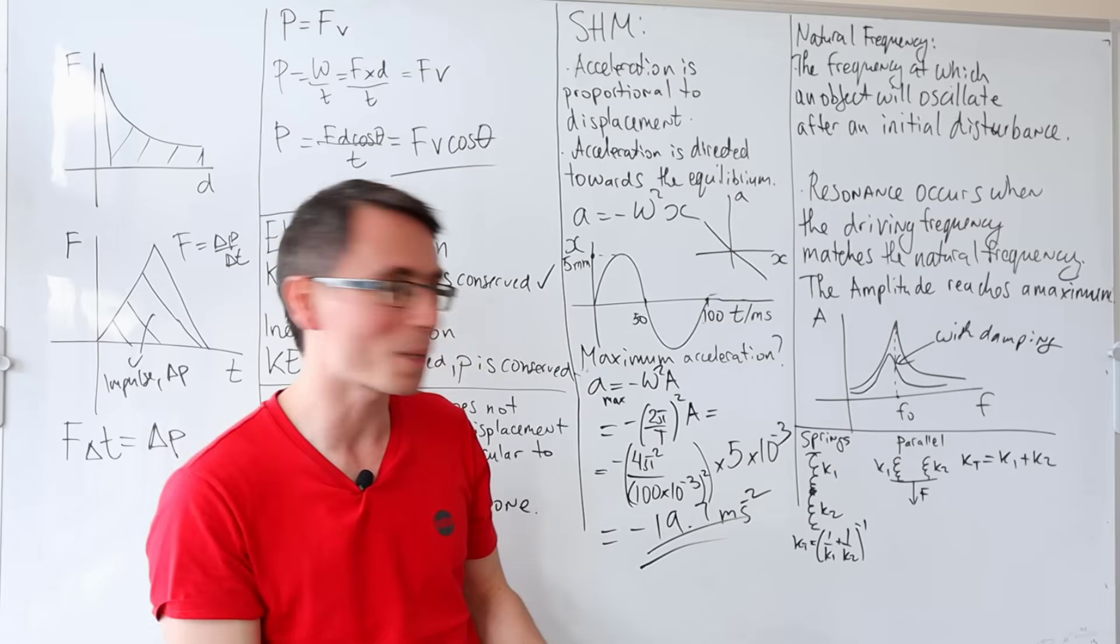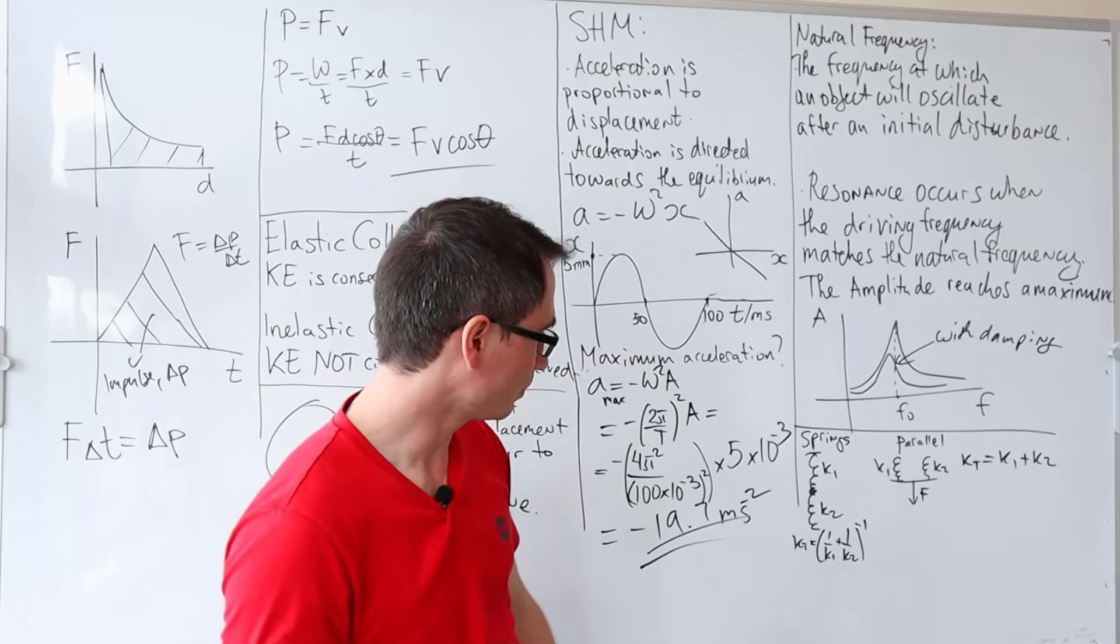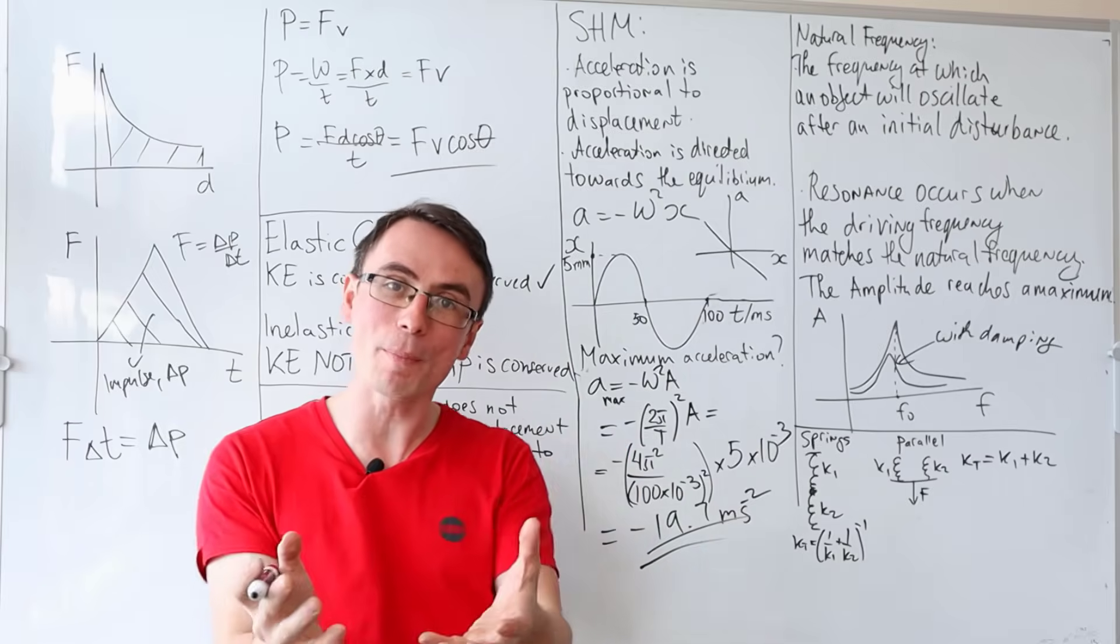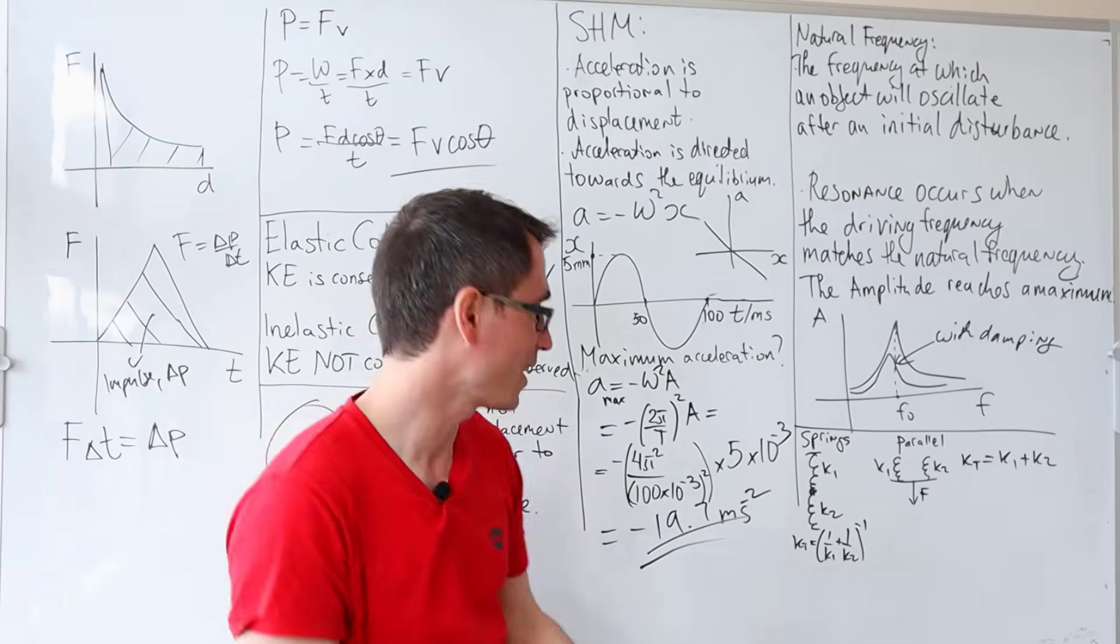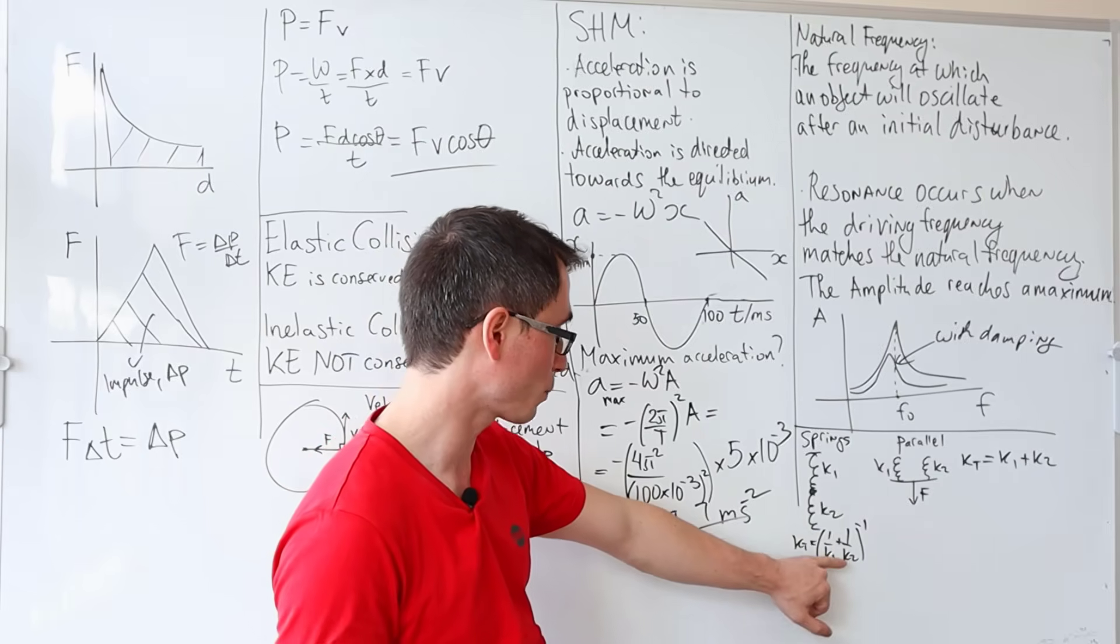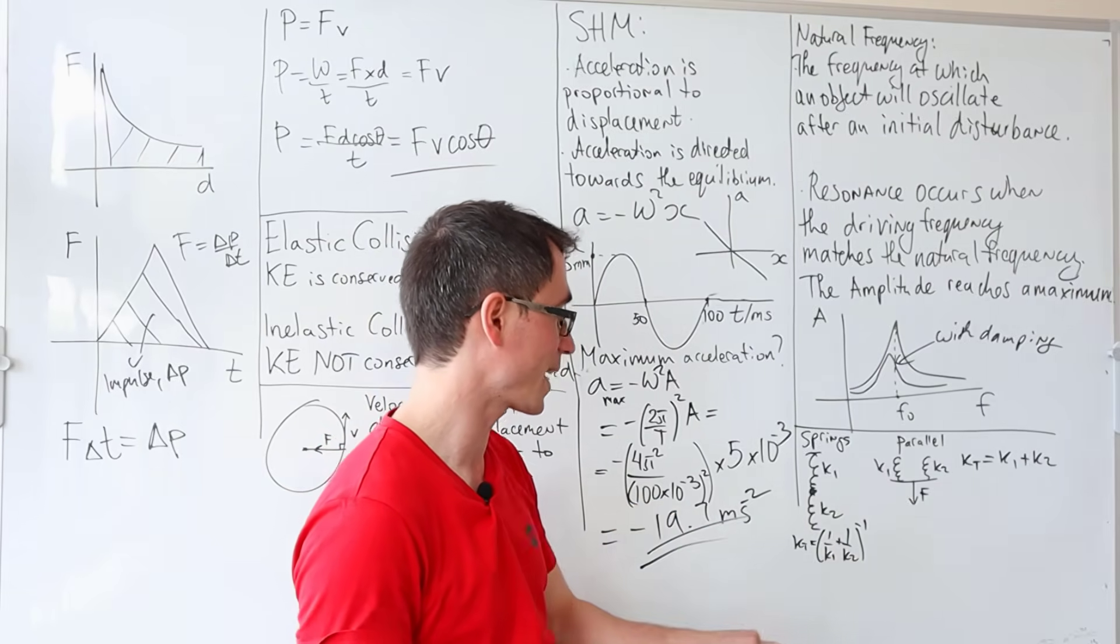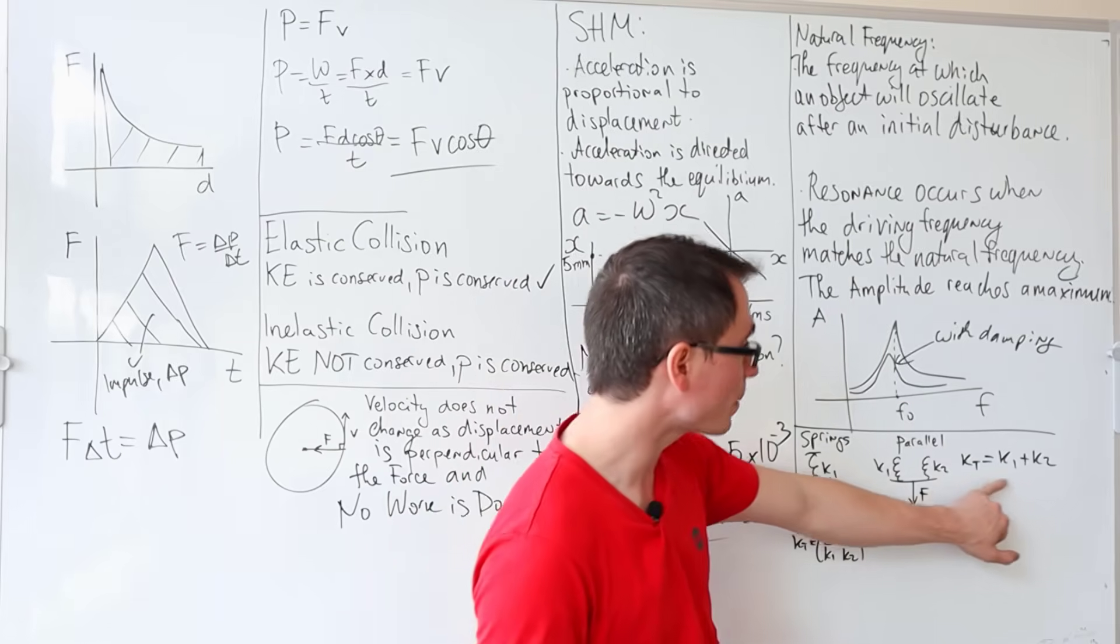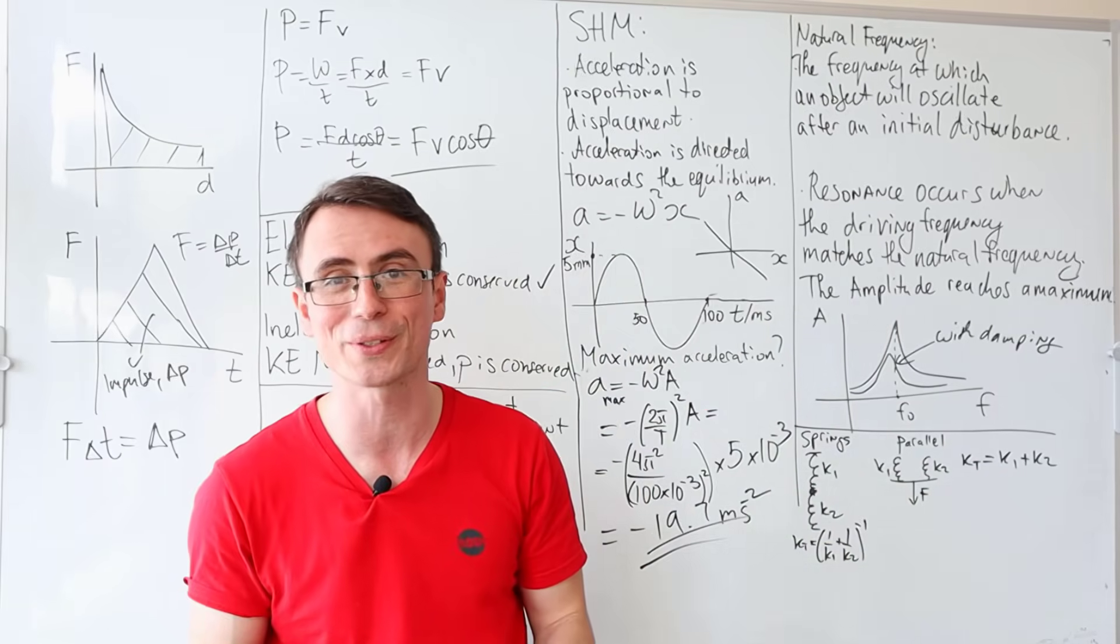Let's also talk a little bit about springs. The rules for adding up springs in series and parallel are opposite to those of resistors. For springs in series, k_total = (1/k₁ + 1/k₂)⁻¹. And if they were to be in parallel, we just simply add the two spring constants together.